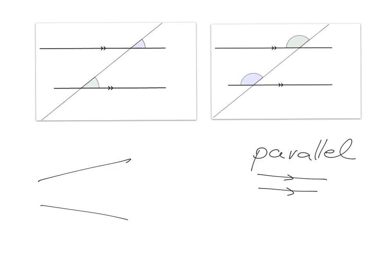We're going to have a look at parallel lines that are cut by another line. This other line that they are cut by is given a very fancy name — it's called a transversal. Transversal is the name we give to this line here that cuts through those two other lines. All right, now we've got our vocab out the way, let's have a look at our first property.